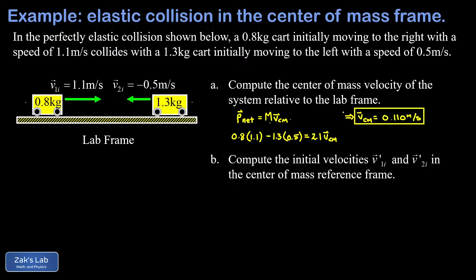Now we use that center of mass velocity to transform the whole picture into the center of mass reference frame. We imagine running to the right at 0.110 meters per second and ask what the initial velocities of these two carts look like from that perspective. Running to the right makes the rightward-moving cart look slower, so V1 initial prime equals 1.1 minus 0.110 meters per second, giving 0.99 meters per second in the center of mass frame.